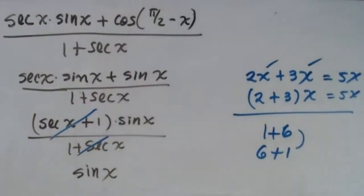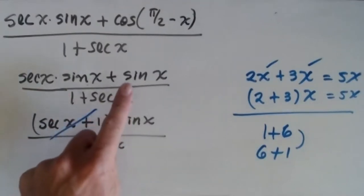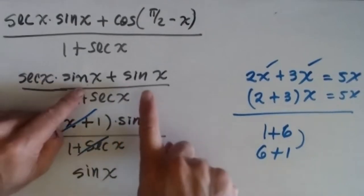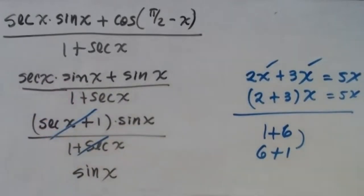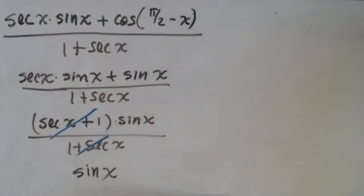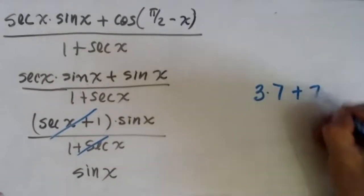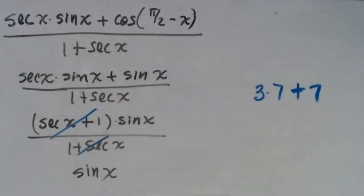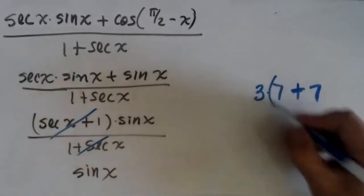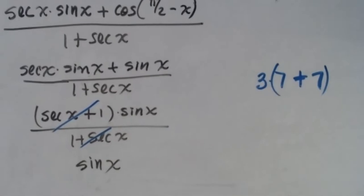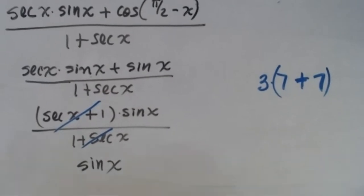A student asks: 'What happened to the second sine x — wasn't there sine x plus sine x?' Careful — suppose you have 3 times 7 plus 7. If you factor incorrectly, they're going to sit you in remediation. Be careful. The factoring was secant x times sine x plus 1 times sine x — the common factor is sine x, giving (secant x + 1) times sine x. The top and bottom cancel.